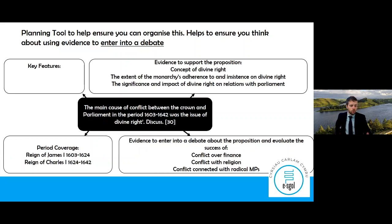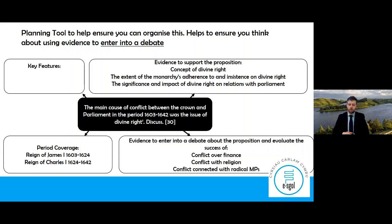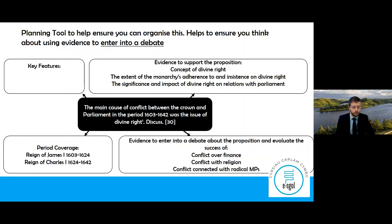Another example with a bit more filled in: 'The main cause of conflict between the Crown and Parliament in the period 1603 to 1642 was the issue of divine right. Discuss.' My periods: the reign of King James I and the reign of King Charles I. Evidence to support the proposition includes the concept of divine right, the extent of the monarchy's adherence to it, and its significance on relations with Parliament. But conflict over finance, conflict over religion, and conflict connected to radical MPs disagrees with the idea in the question — so you're entering into a debate by using them.